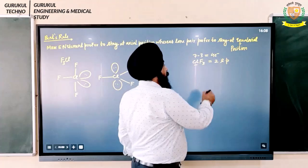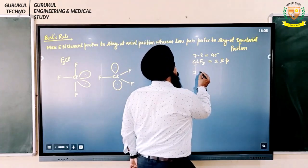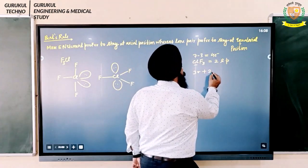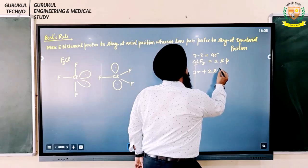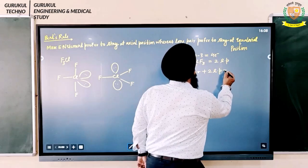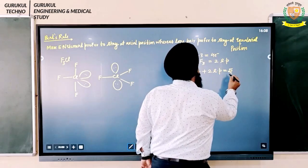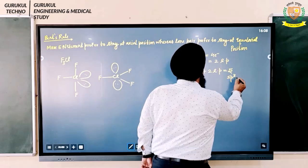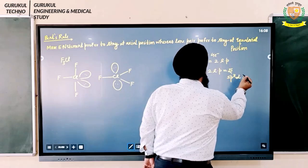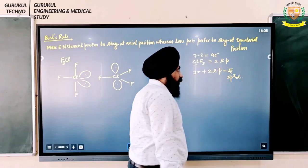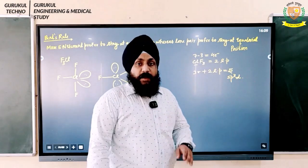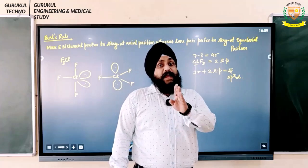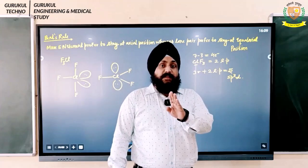Now we will calculate the hybridization. Here we have three sigma bonds along with two lone pairs, so the sum is five. Therefore the hybridization is going to be SP3D.